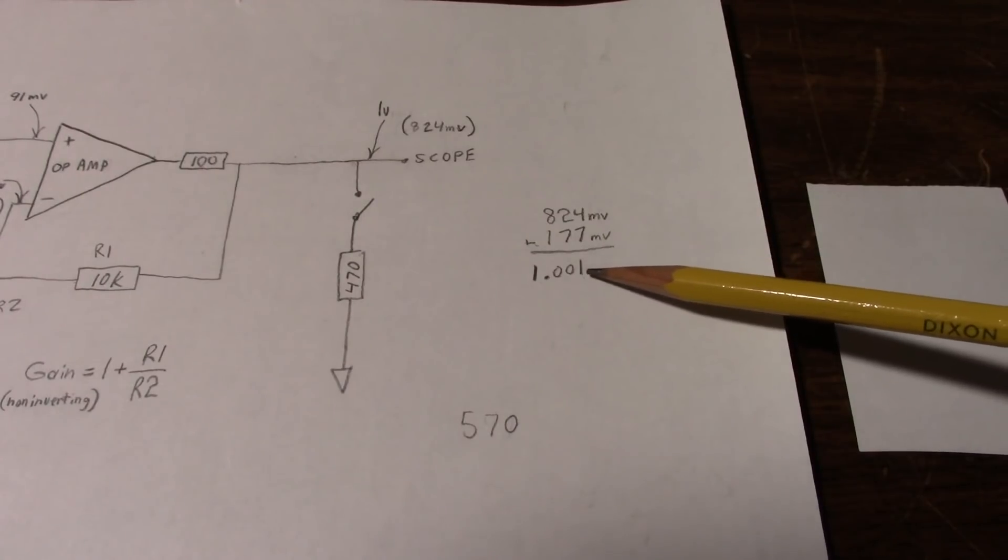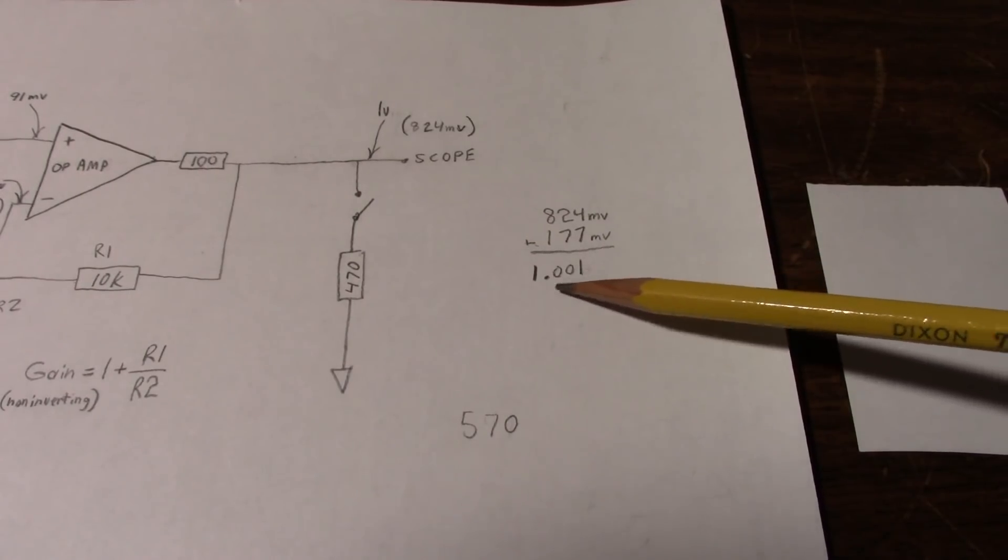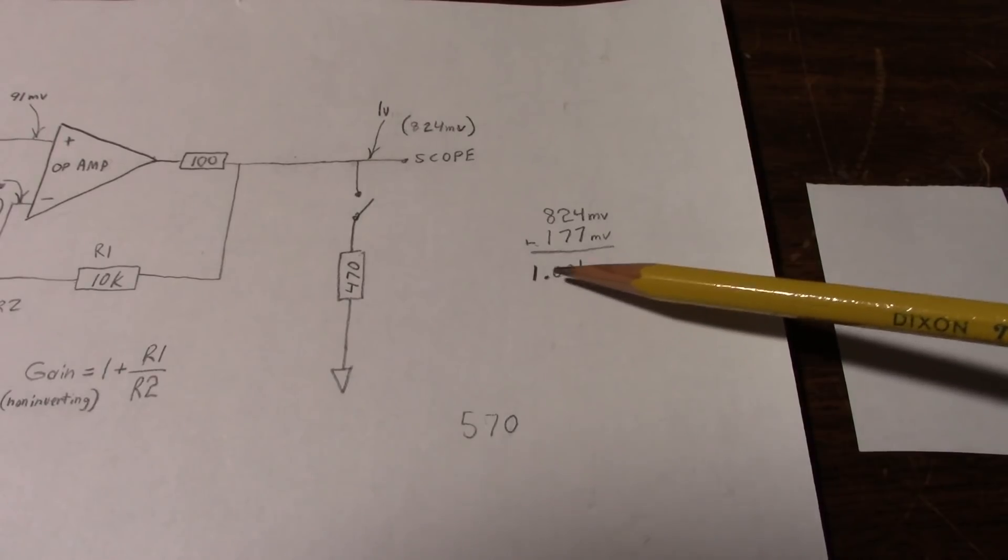Now due to rounding error, there is an error in the least significant digit, but, you know, it brings it back to 1 volt.